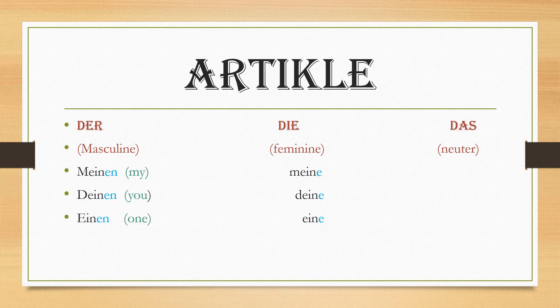Before proceeding, I'll tell you some of the articles in German. We'll take a quick glance — a detailed video on articles is coming soon. In English we have 'a' and 'the'; in German we have der, die, and das. Der is for masculine, die is for feminine, and das is for neuter. Mein means my, dein means your.